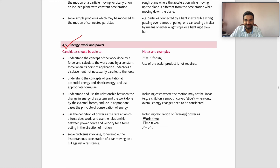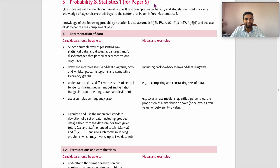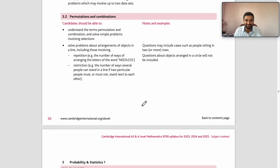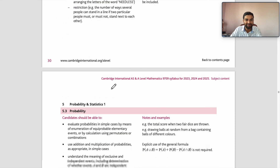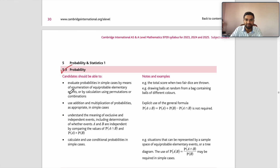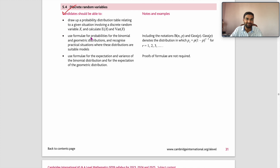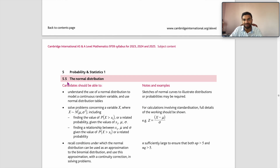Probability & Statistics 1 is also a 50-mark paper with five chapters: Representation of Data (simple but a vast chapter), Permutation and Combination (easy and interesting — you just use logic and technique to find the answer), Probability, Discrete Random Variables (finding expectation and variance tables), and Normal Distribution. Normal distribution uses those same expectation and variance concepts, along with Binomial Distribution.